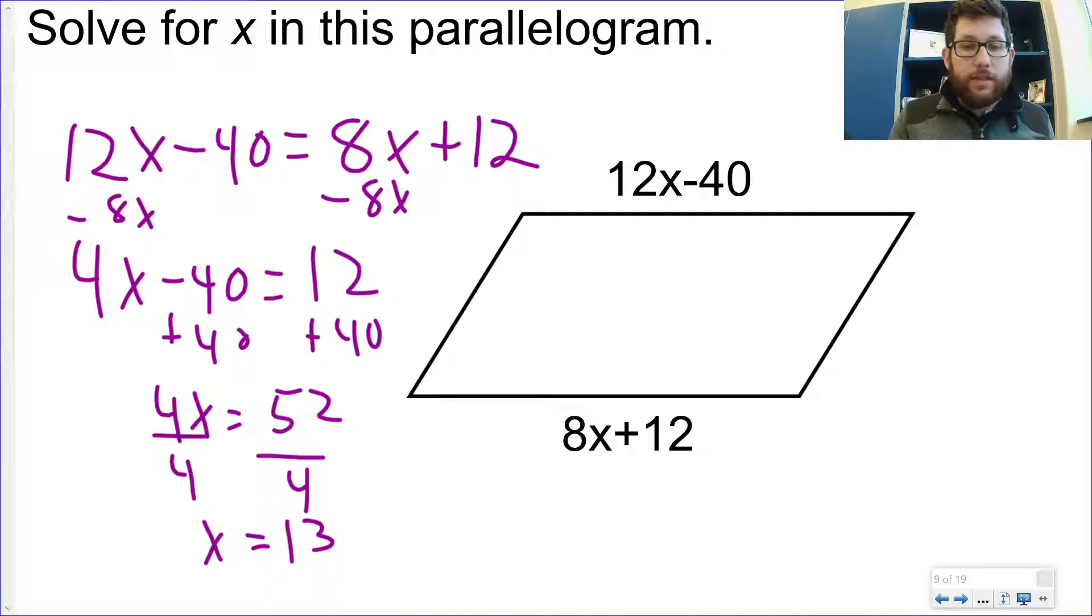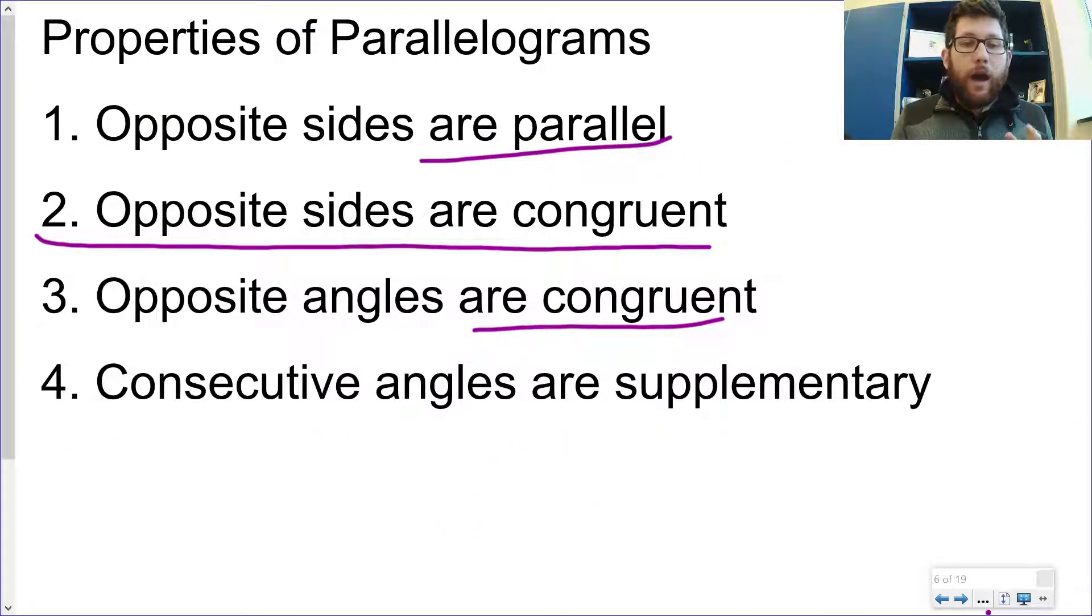But remember your rules. This is the most important part. Opposite sides are parallel. They're also congruent. Opposite angles are congruent. And angles next to each other add up to 180.